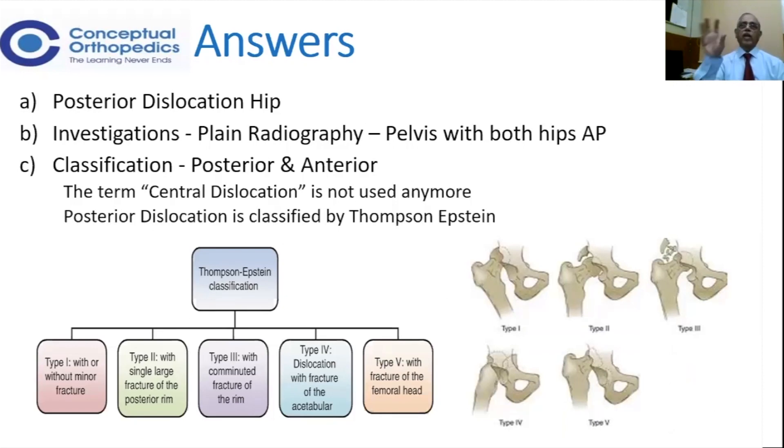And type five is the fracture of the head of the femur. As all of you know, it is called the Pipkin's fracture.